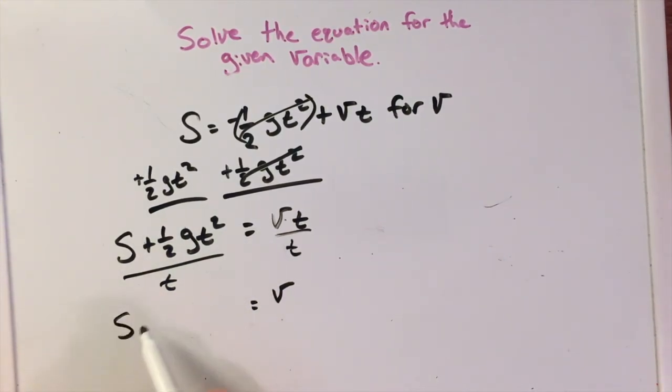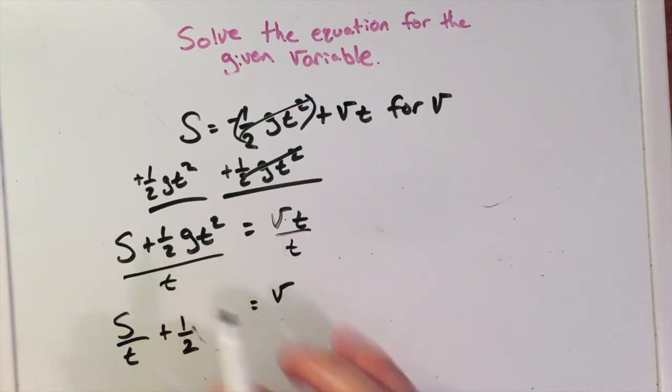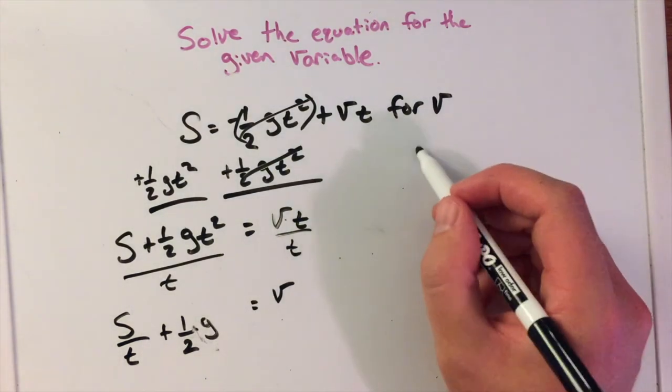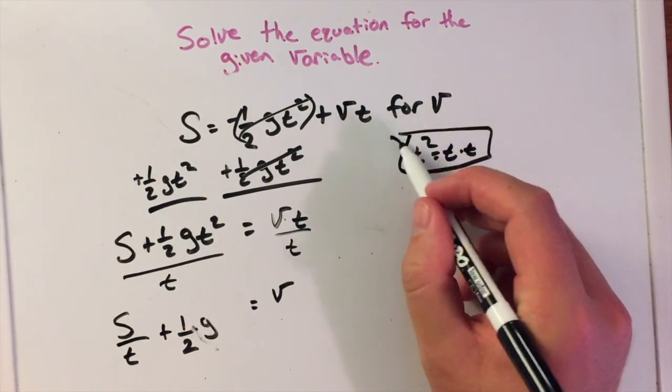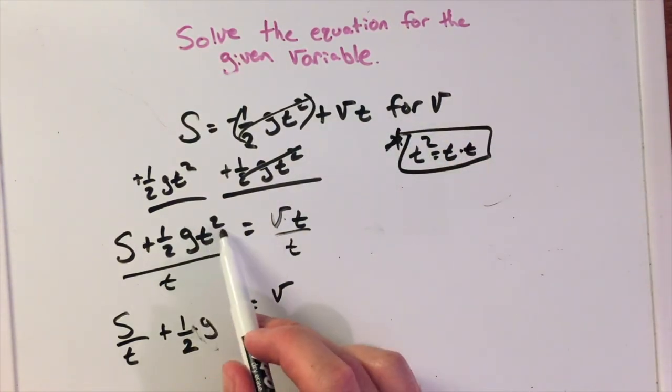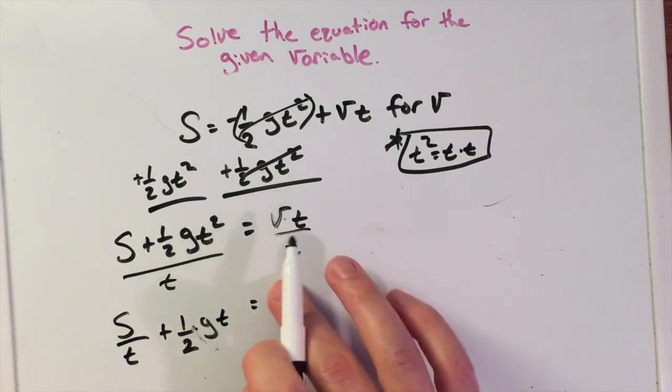So I have s over t plus one-half g times... now we have t and t squared. Remember, t squared is just having two t's: t squared equals t times t. So there are two t's here. One of them will cancel, and we're left with one t. That's our final answer for v.